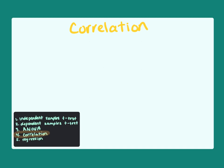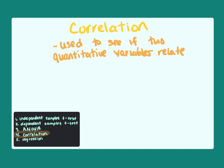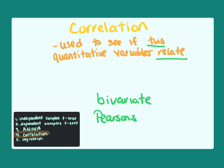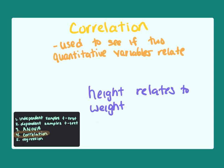The t-tests and ANOVA are used to compare the means of groups, but sometimes we're interested in looking at two variables. Correlation is used to see if two quantitative variables relate — that keyword 'relate' is a good clue that your hypothesis requires a correlation. When looking at two variables, this is called a bivariate correlation, also known as Pearson's correlation or PPMC (Pearson's Product Moment Correlation). When simply stating that two things will relate, the hypothesis requires a two-tailed test.